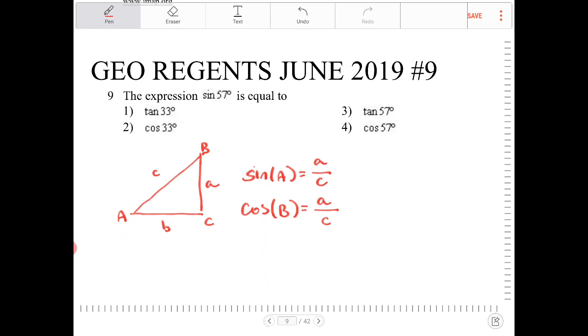So here we can see clearly that sine A and cosine B are the same. So we can say sine A and cosine of B is actually the same.